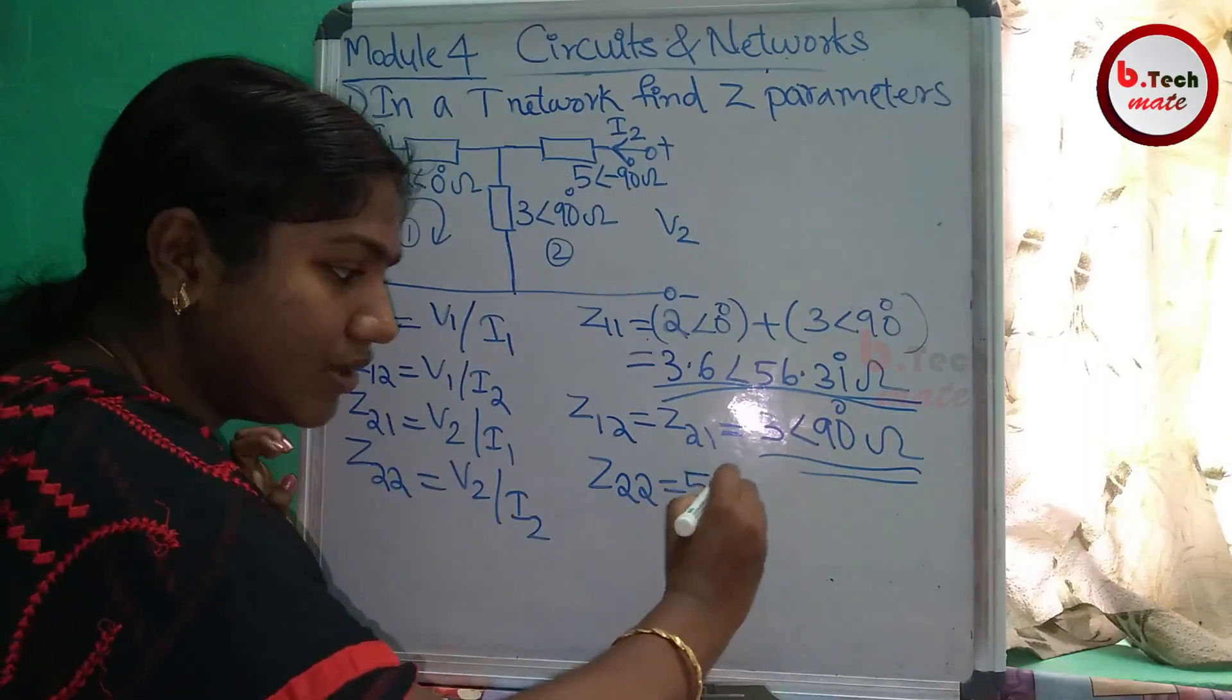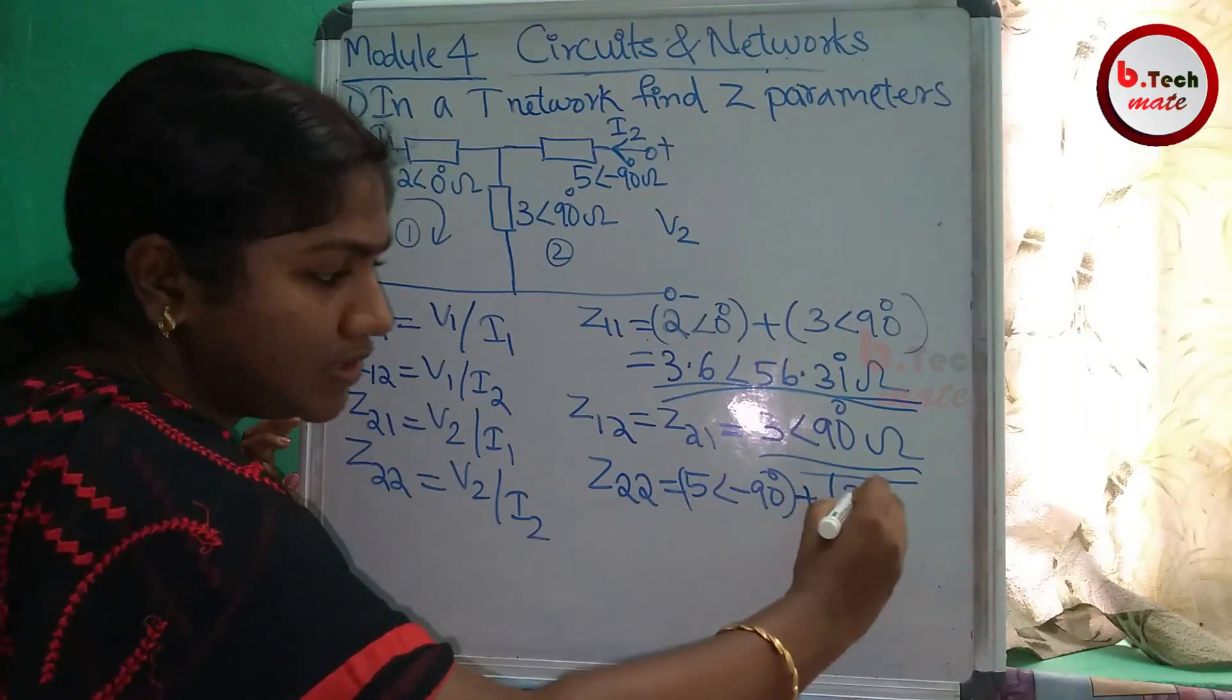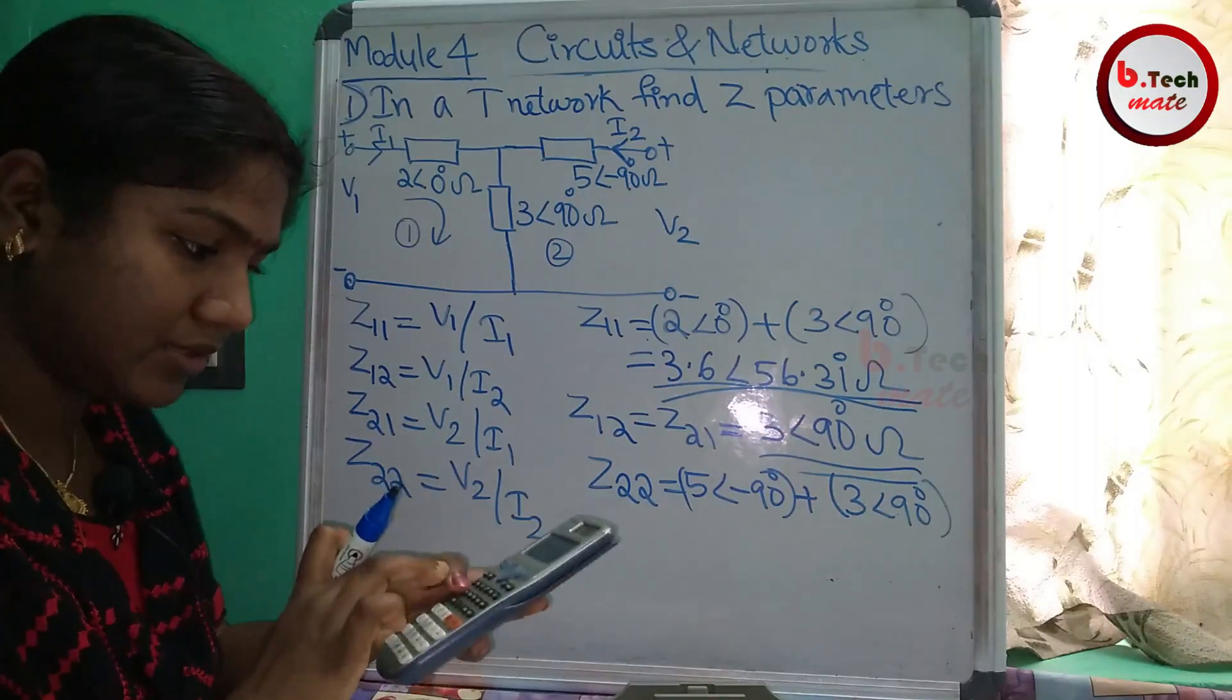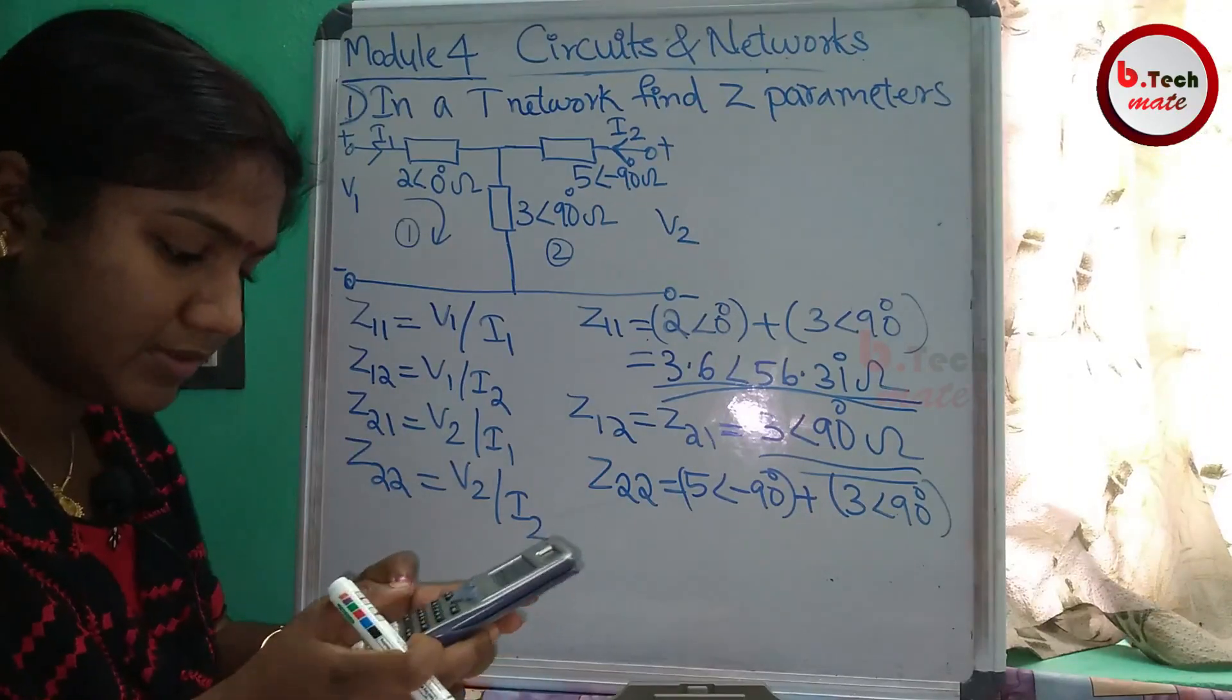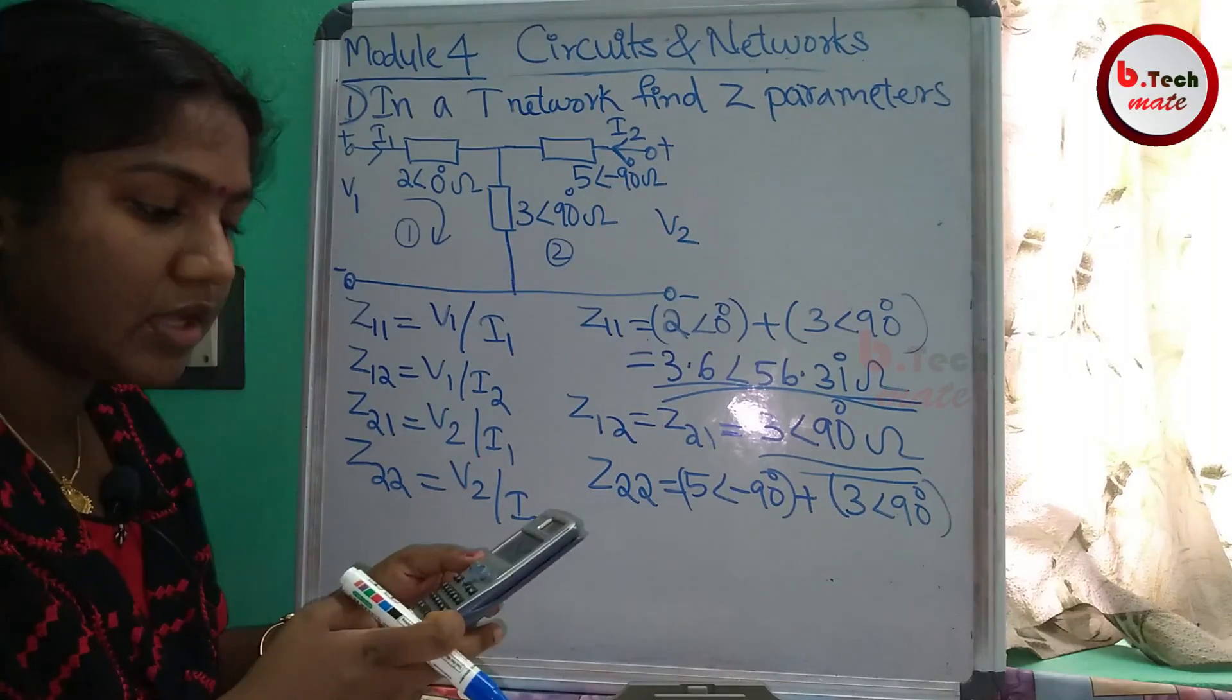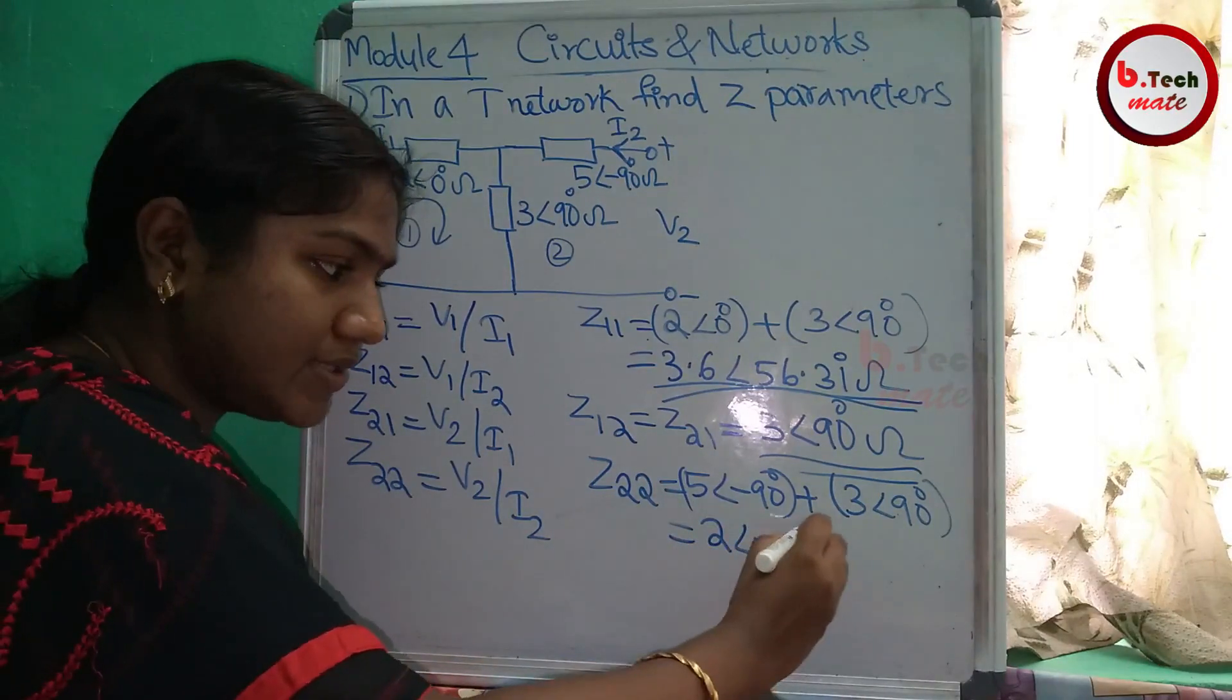We need to add the impedances to the table. To calculate the impedances, we use 5 angle minus 90 plus 3 angle plus 90. If we calculate the impedances as well.